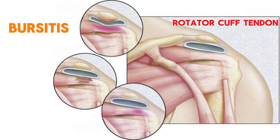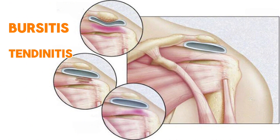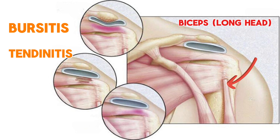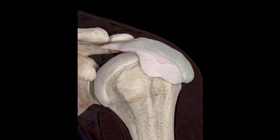Next, the rotator cuff tendon below the bursa becomes partially torn, causing tendonitis. Lastly, the deepest structure affected is the biceps tendon, causing biceps tendonitis.